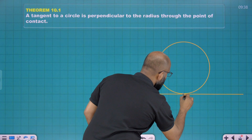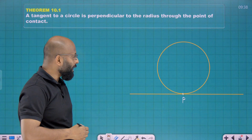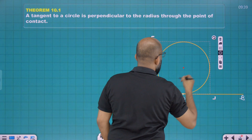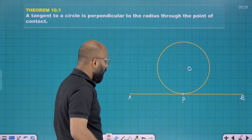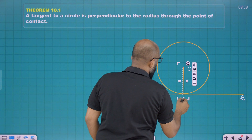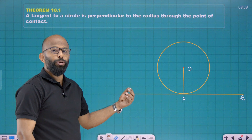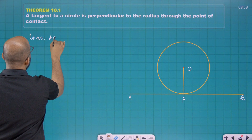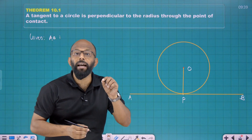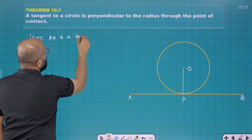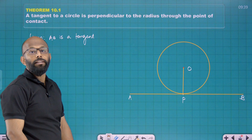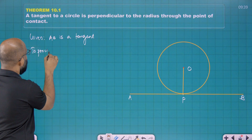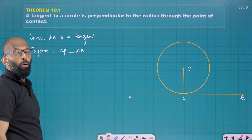There is a point of contact, which I am taking as P, and AB is my tangent. The center is O, and we join OP. Given information: AB is a tangent. To prove: OP is perpendicular to AB.